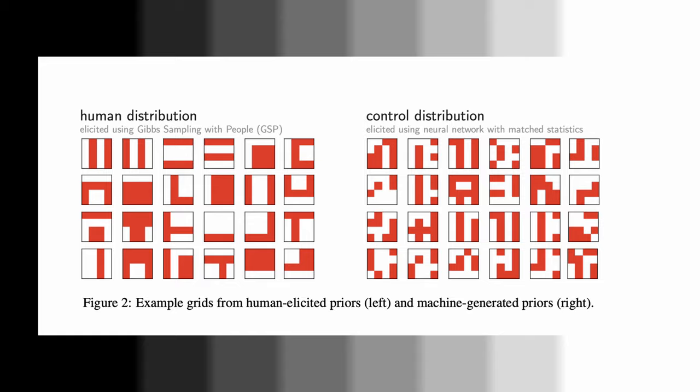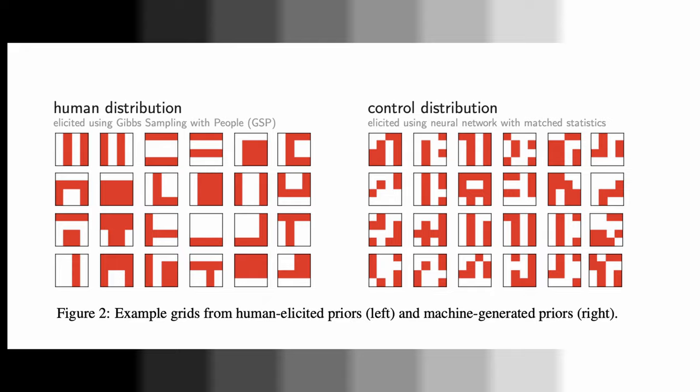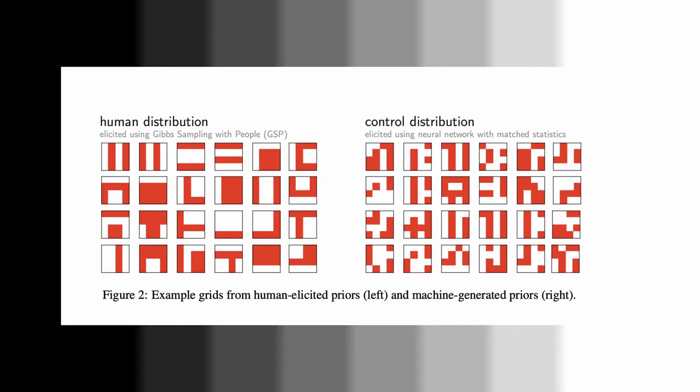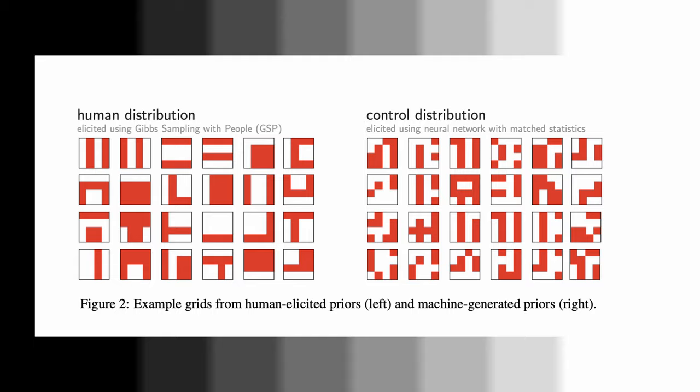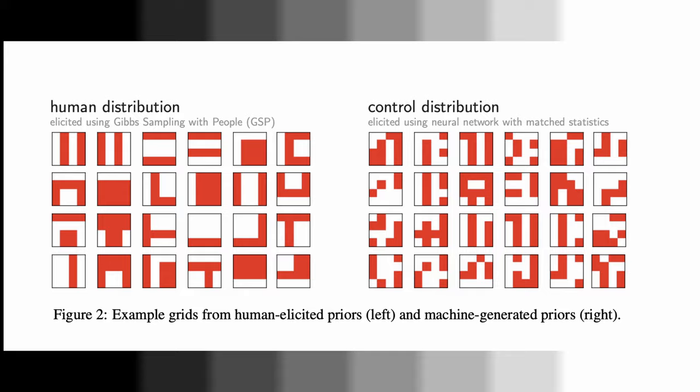They also built a control distribution by sampling from machine priors — putting a machine in the loop instead of a human in the Gibbs sampling process. Comparing human versus machine samples in Figure 2, the two distributions look similar, but as a human you can tell something is off about the control distribution because it is devoid of certain abstract concepts like lines, shapes, and letters. To test acquisition of human inductive priors on neural network agents, each grid was formulated as a reinforcement learning game based on Minesweeper or Battleship — sequentially revealing tiles, with red tiles giving positive reward and white tiles giving negative reward.